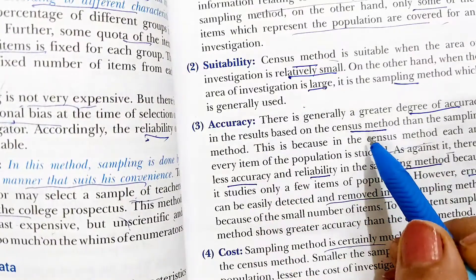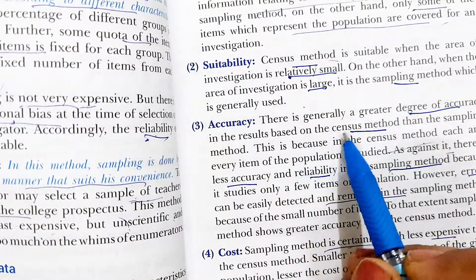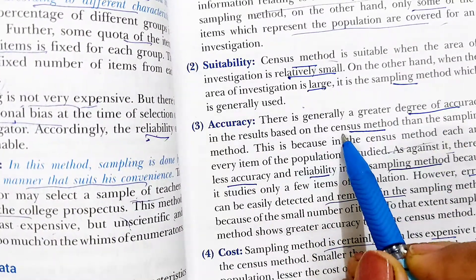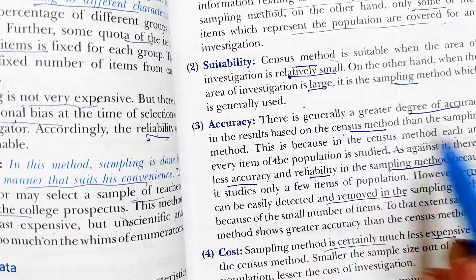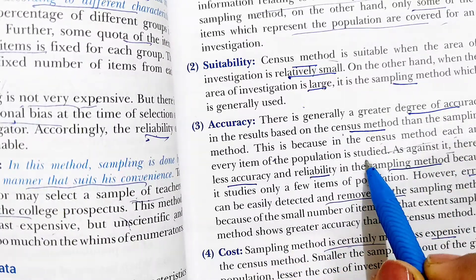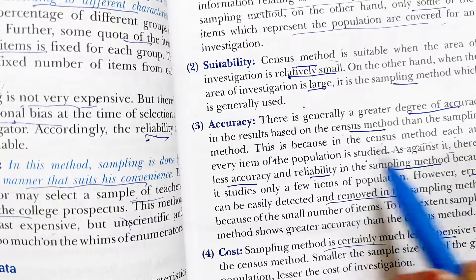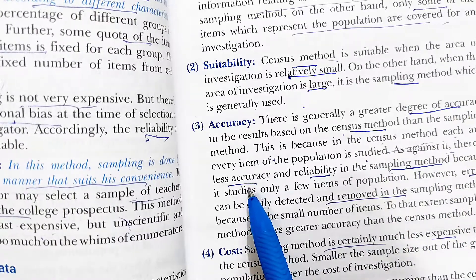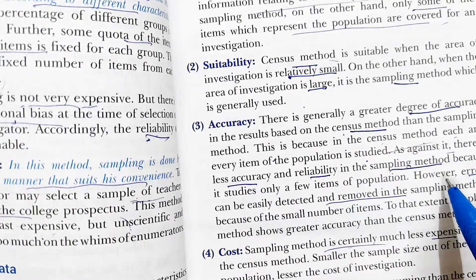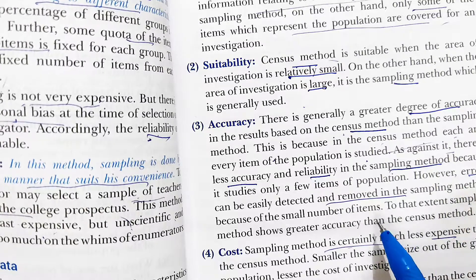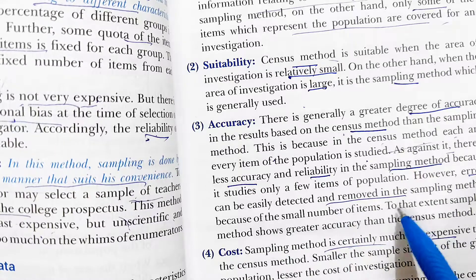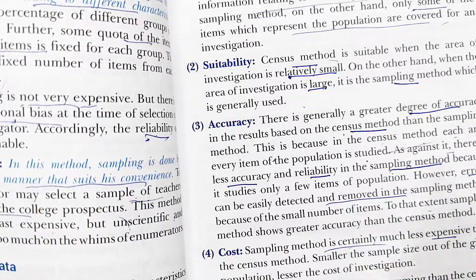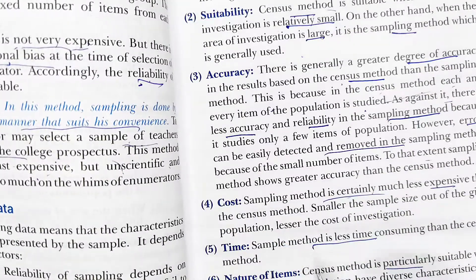Then, accuracy. The census method has greater accuracy than the sample method because each and every item of the population is studied. The sampling method has less accuracy and less reliability. However, if there is an error, it can be more easily identified and removed in the sampling method, which is not the case in the census method.